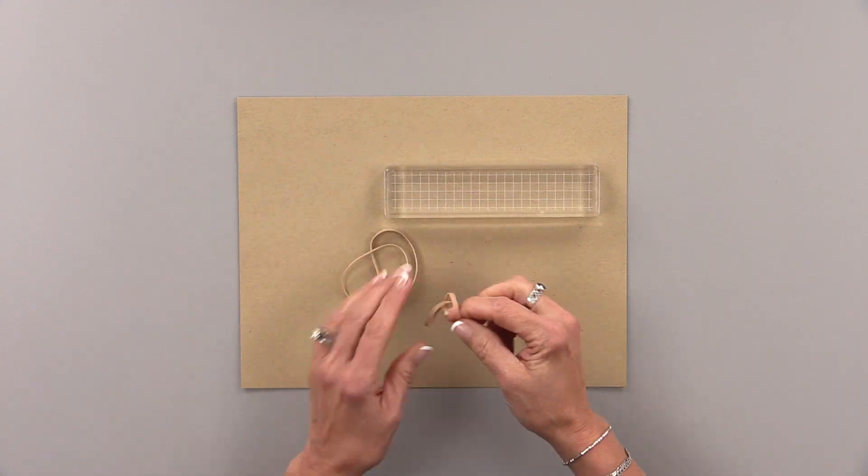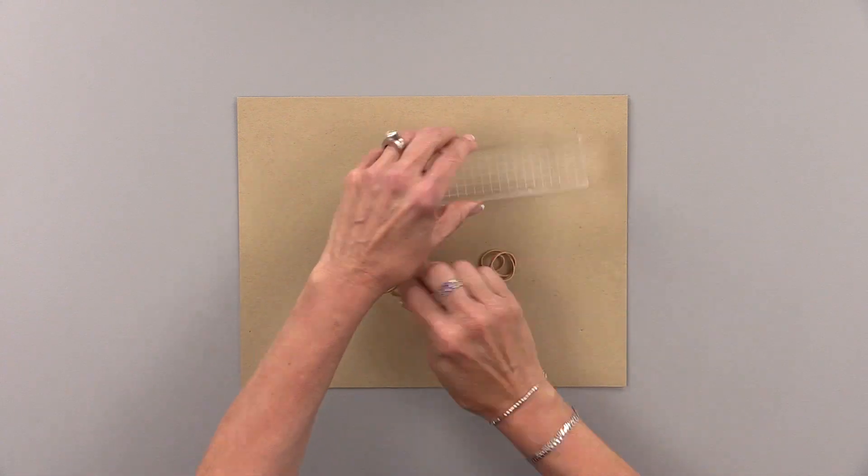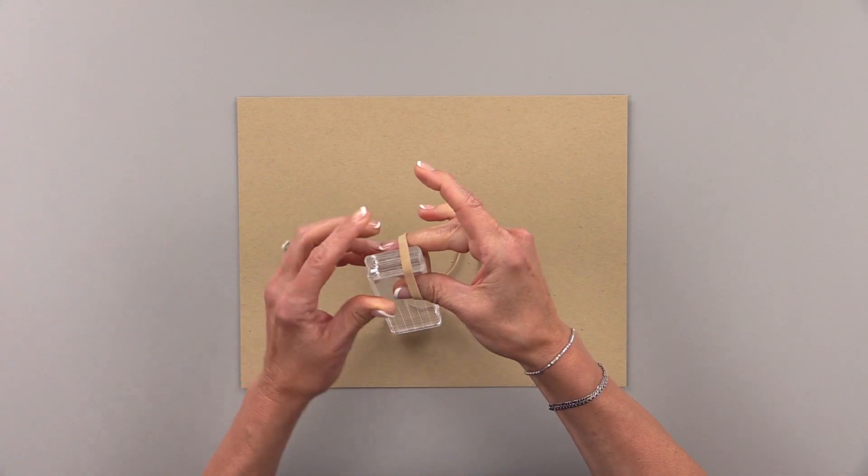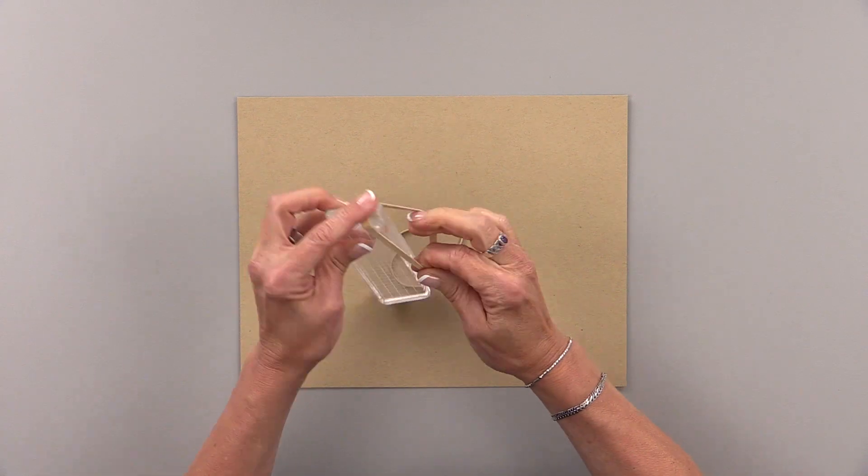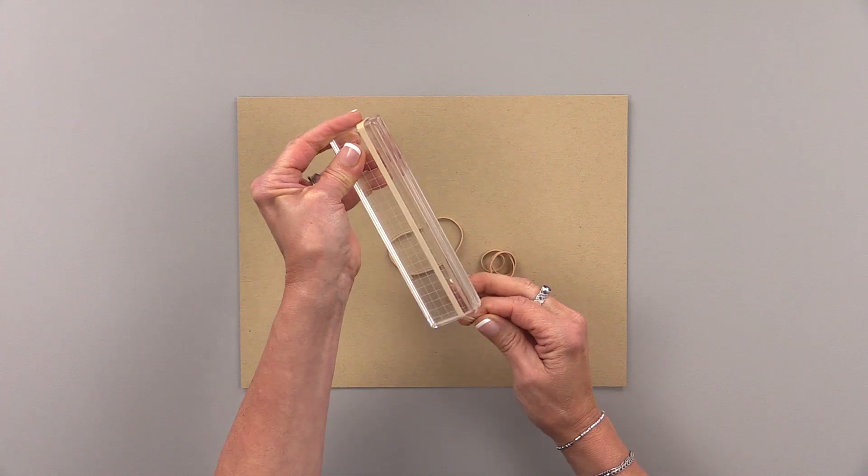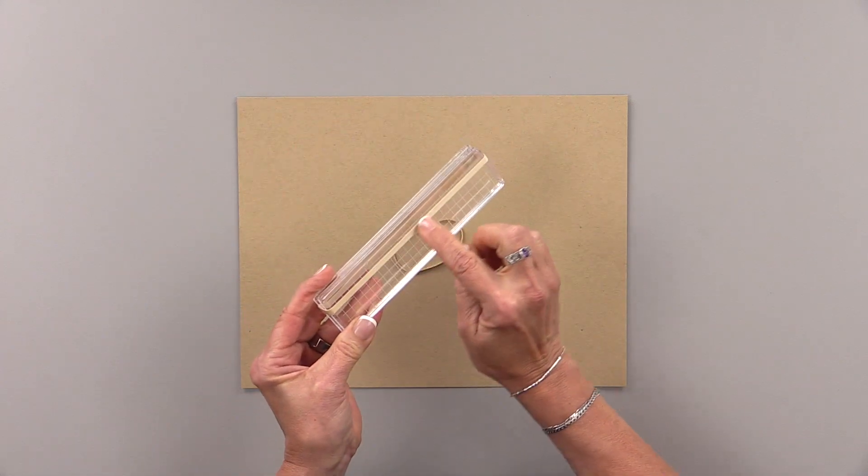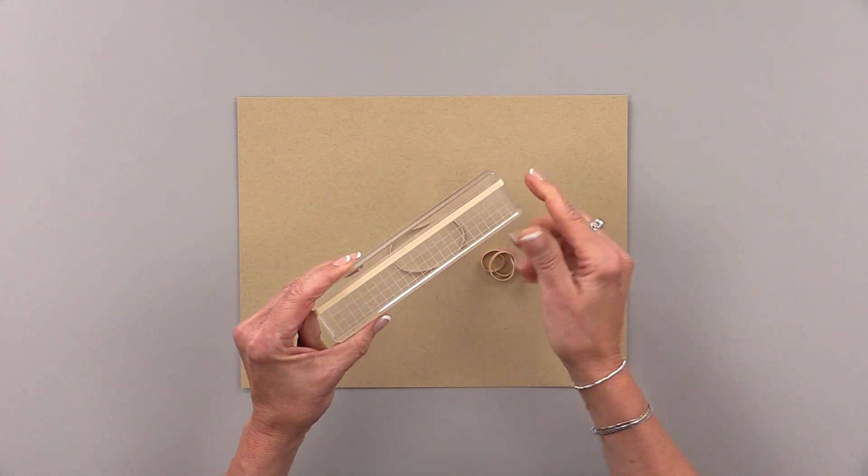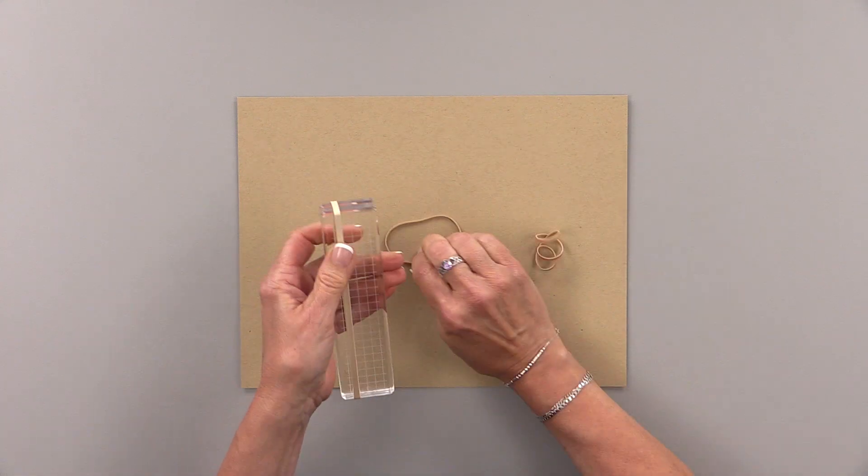I have a variety pack of rubber bands with lots of different thicknesses. You want to make sure you have a variety of thicknesses, different widths. I'm starting with my thickest rubber band and placing it around this long acrylic block. You do want to make sure that your rubber bands aren't twisted for this technique.